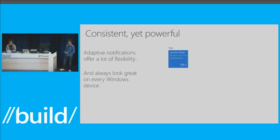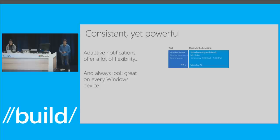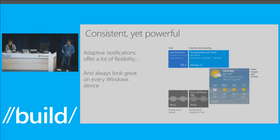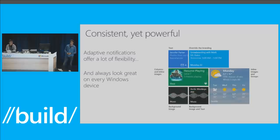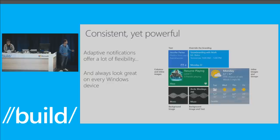Adaptive notifications had a goal of being consistent yet powerful. If you have a text-heavy tile, we give you all the built-in text styles of the universal platform. You can override the branding, customize areas like your logos. You can do relatively complex layouts such as columns and inline images — this is not a XAML-rendered thing, it's just our adaptive payload. Background images, inline images, columns — all built with adaptive. The goal being to let you design your tile how you want.